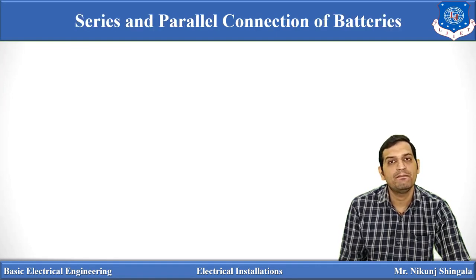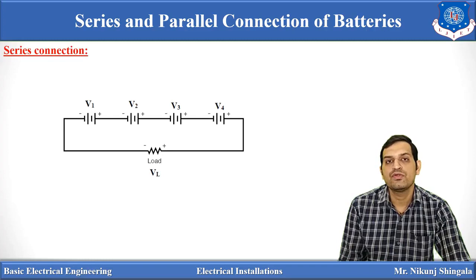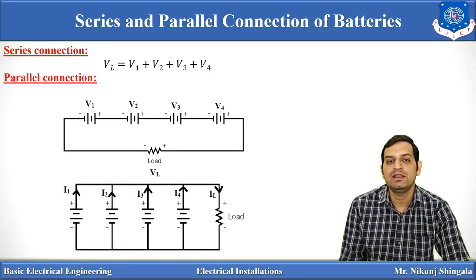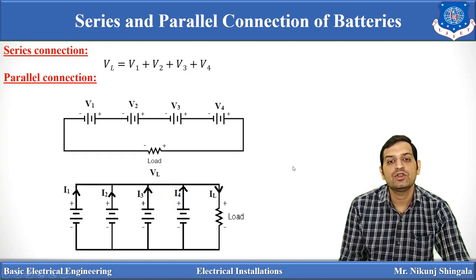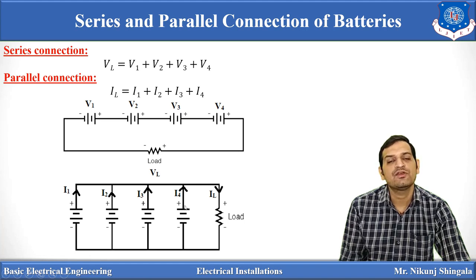For series and parallel connection of batteries: series connection is used when high voltage is required — total voltage = V1 + V2 + V3 + V4. Parallel connection is used when high current is required — total load current IL = I1 + I2 + I3 + I4, while voltage remains equal across each battery. So series connection gives more voltage and parallel connection gives more current, depending on the requirement.